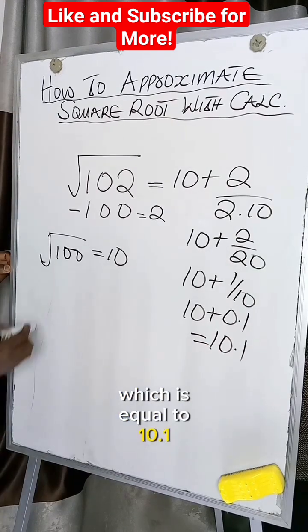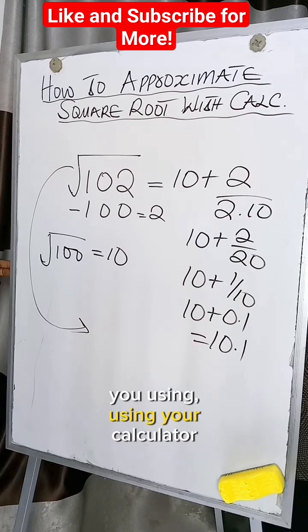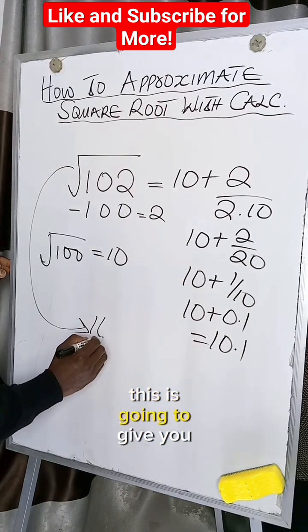So if we take the square root of this using your calculator, this is going to give you 10.099.